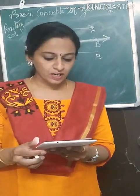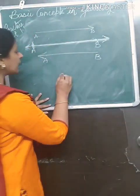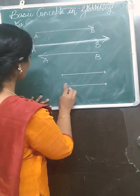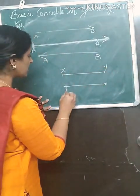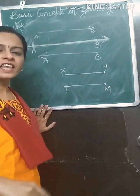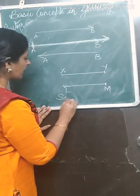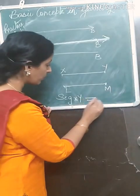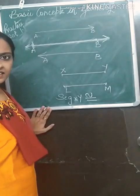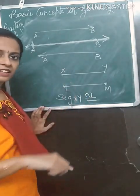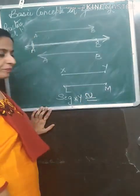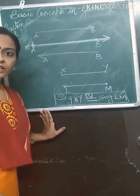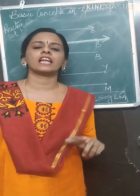Next, congruent segments. Any two segments whose lengths are equal are called congruent segments. For example, segment XY congruent to segment LM. The congruent sign is an equals sign with a tilde on top — the tilde goes from bottom to top. Segments which are equal in length are called congruent segments.